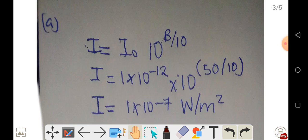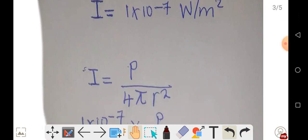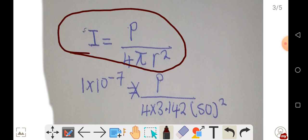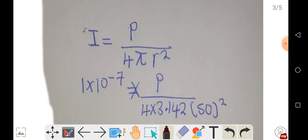At this point, we can now calculate the power. That's what the equation is requiring us to do. The intensity of a spherical wave is given by this equation: intensity equals power over 4 pi r squared.